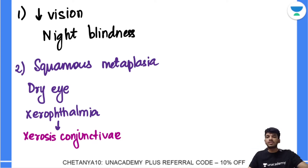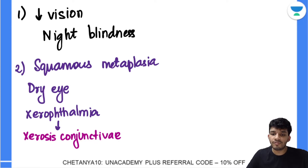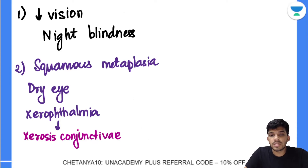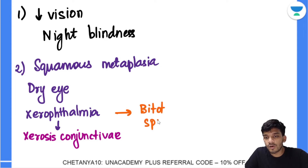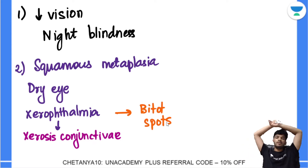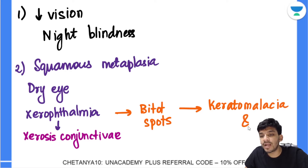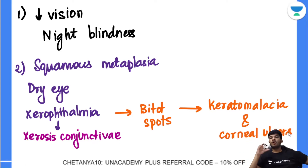After xerosis conjunctivae, the corneal epithelium gets converted and there is a buildup of keratin. This leads to the next stage: Bitot's spots — opaque, plaque-like deposits of keratin debris on the conjunctiva. Eventually there is destruction of the cornea, called keratomalacia, with corneal ulcers. Overall, there is squamous metaplasia and a transition of cell differentiation.